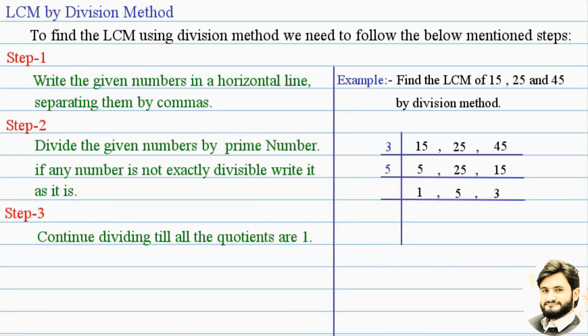Now, again divided by 5. So, 1 as it is. And 5 1s are 5. And 3 as it is.